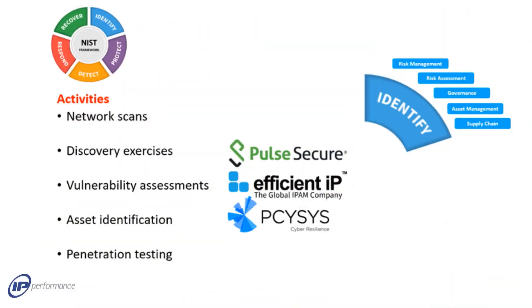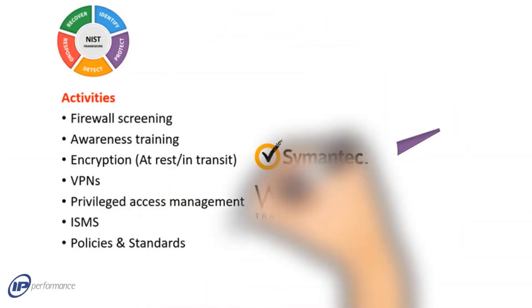The Identify function is a typical starting point for the security process. Asset management is a vital category under this function — visibility of all your assets is critical. If you don't know something is there, you can't possibly protect it. Visibility includes knowing your users, the applications they use, and the devices on which they run them, as well as your network infrastructure.